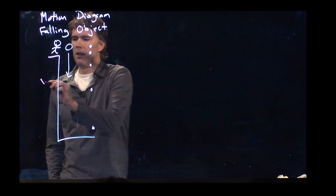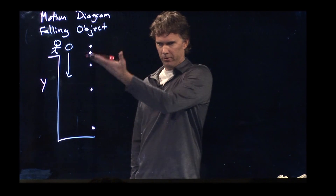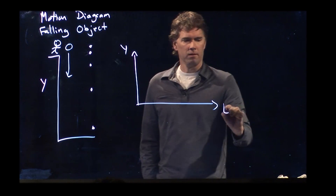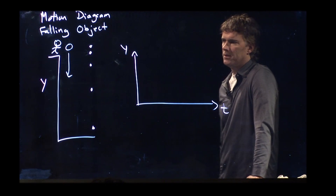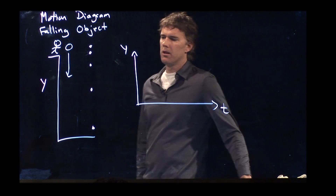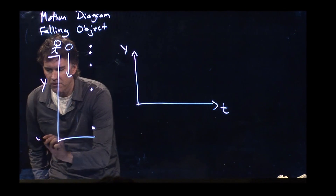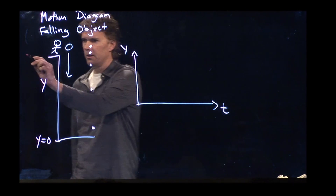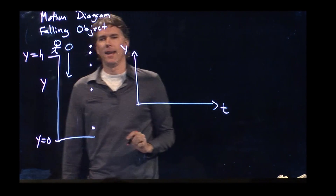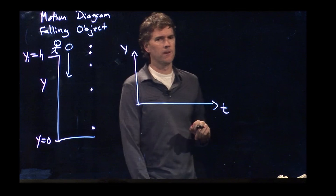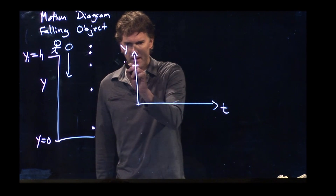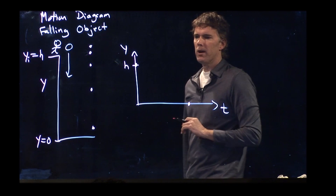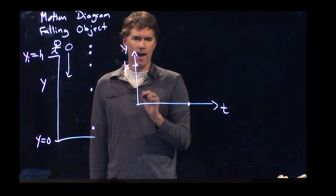So let's see if we can plot y, the vertical position of this thing, as a function of time. What do we need to know? Well, we probably need to know where y is equal to zero. So let's say that the ground is y equals zero, and we start up at h. So y initial is equal to h. On my graph here, I would start at h — that's where that first dot is. We know that the last dot has to be right there at y equals zero. And now, how do I connect them?